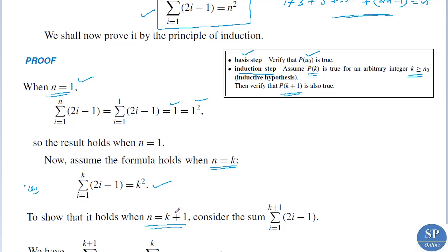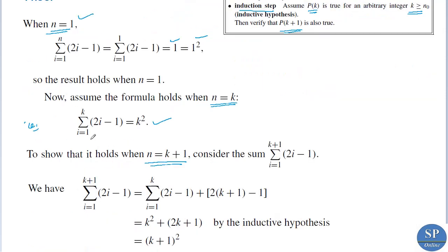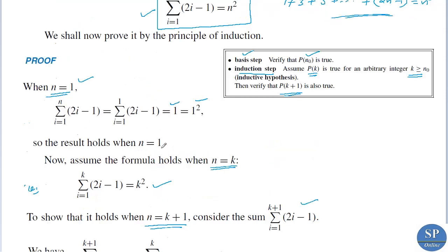Then we can say that it is true for any natural number, that is for any n greater than or equal to 1. So we have to consider summation i from 1 to k plus 1 of (2i minus 1). We have to prove that it is true for n equal to k plus 1, that is summation i from 1 to k+1 of (2i minus 1) is equal to (k+1) squared.